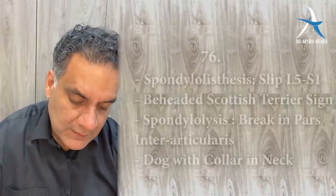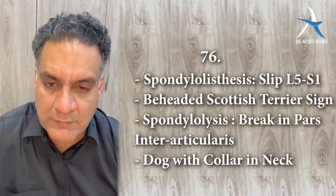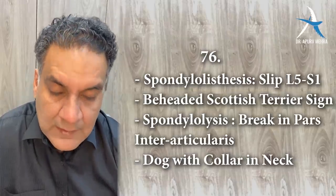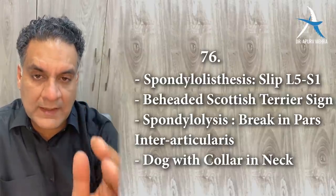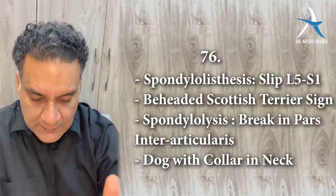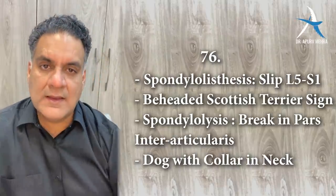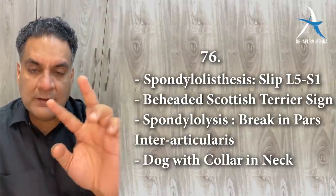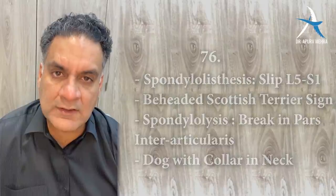Point number seventy-six: spondylolisthesis means slipping of one vertebra over another — L5-S1 is the most common level. On oblique or lateral X-ray views it is called the beheaded Scottish terrier sign. Spondylolysis is a break of the pars interarticularis — the area between two articular facets — called a dog with a collar in the neck.